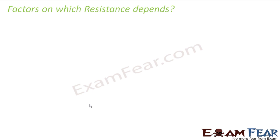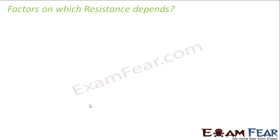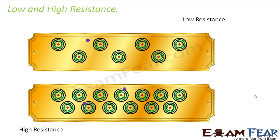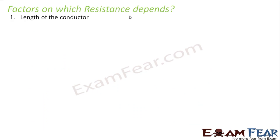So now let us see what are the factors on which resistance of a material depends. The first one is the length of a conductor. Greater the length of a conductor, more will be the collision. If the length of the conductor is more, the free electron will experience more and more collisions. So more collision means more resistance. Therefore resistance will increase with increasing length — resistance is directly proportional to the length of the conductor.